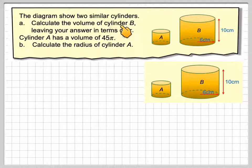The diagram shows two similar cylinders, so this one is an enlargement of this one. Calculate the volume of cylinder B, leaving your answer in terms of pi. Cylinder A has a volume of 45 pi. Calculate the radius of cylinder A.